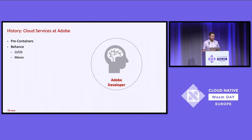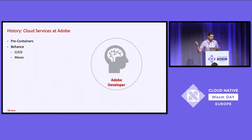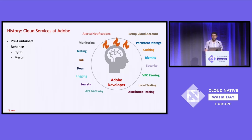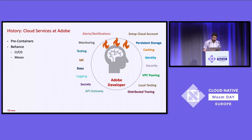Why did we do this? If you think about a developer — this is an Adobe developer, but a lot of you can probably empathize — what are the things that a developer has to think about? There's a lot of different things, and that landscape is changing all the time with technologies. This causes problems when you're trying to do things in a large organization. Do you want 20, 30, 50, 100 different teams, different orgs, different geos reinventing the wheel all the time? I don't think so.